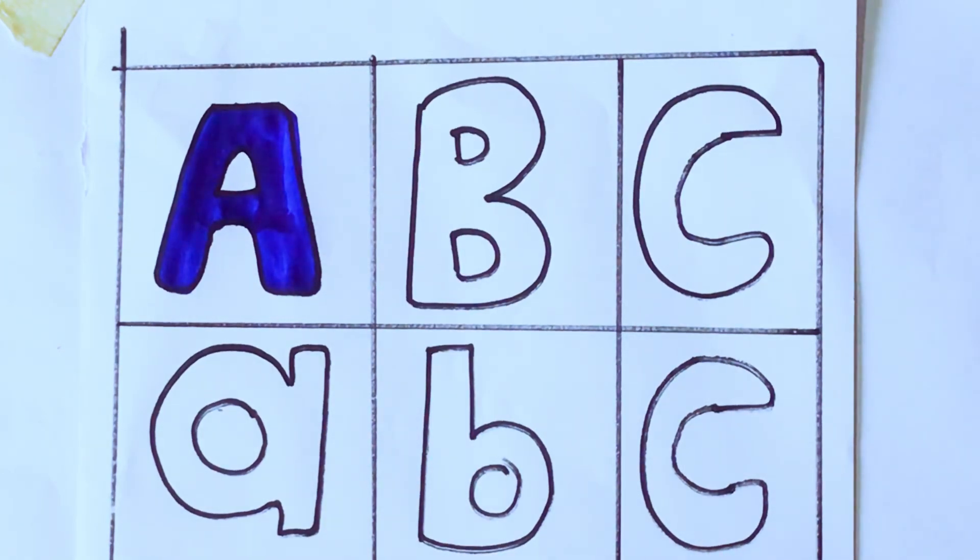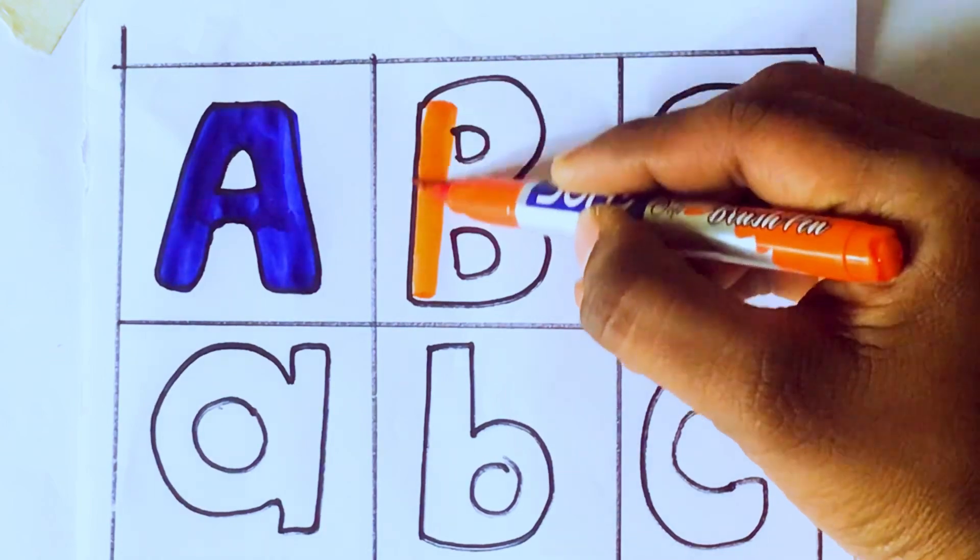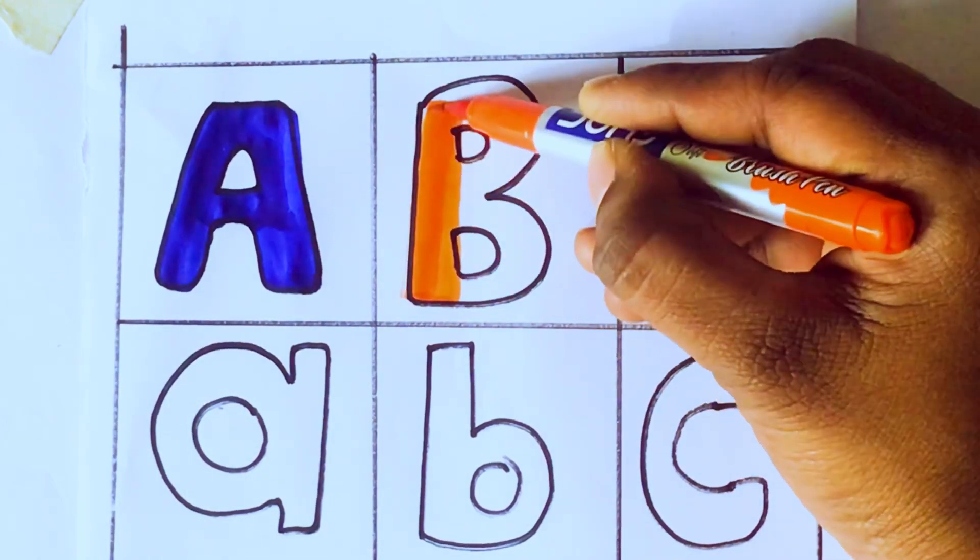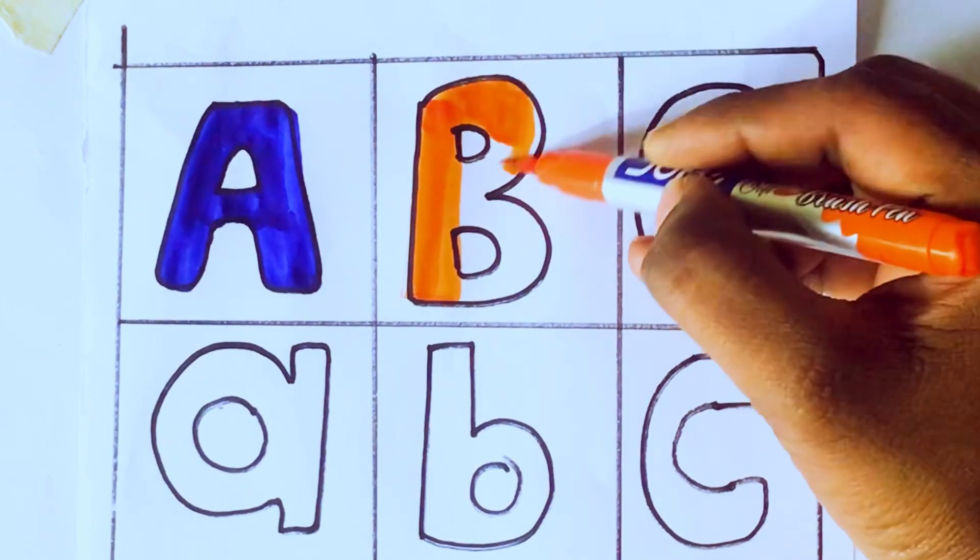Orange color, B. Which letter kids? B. B for ball. B-A-L-L, ball.